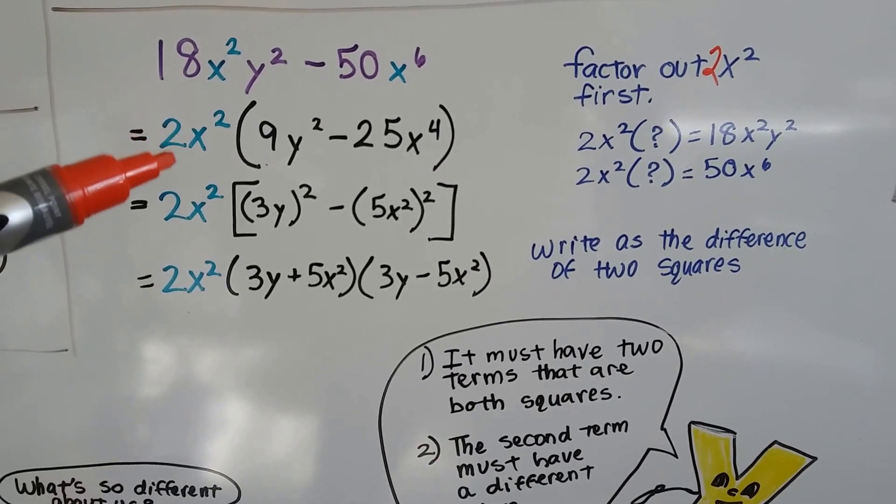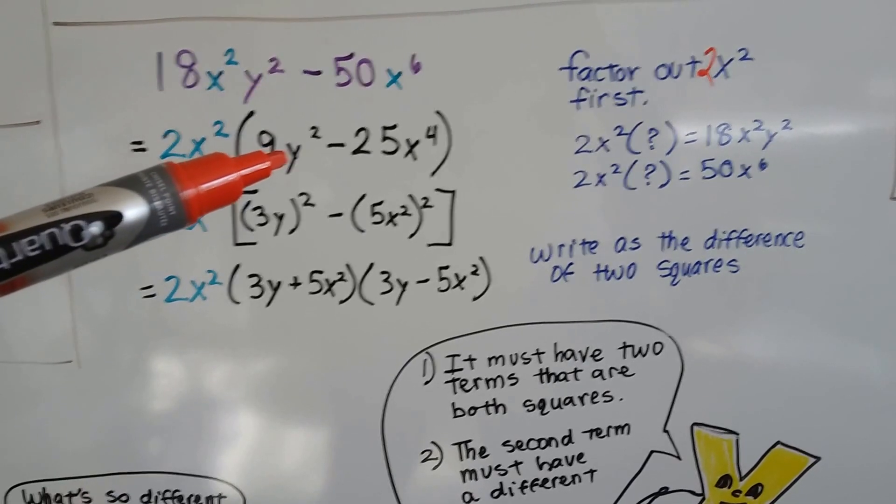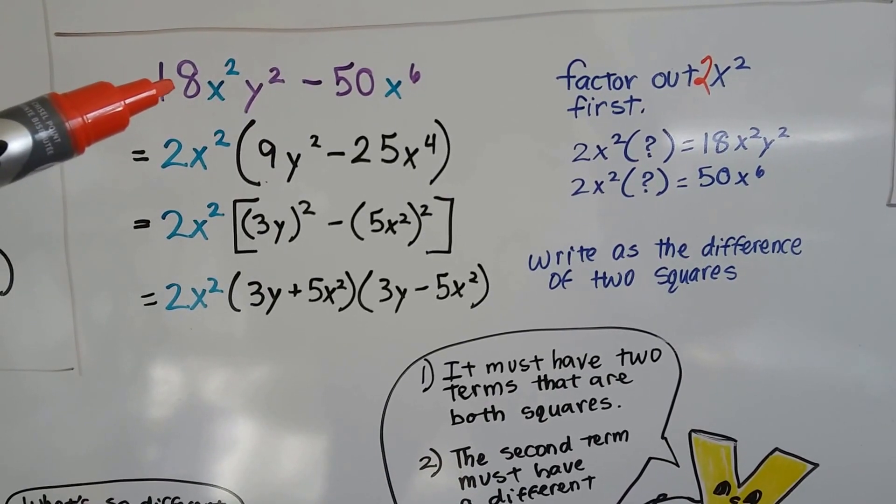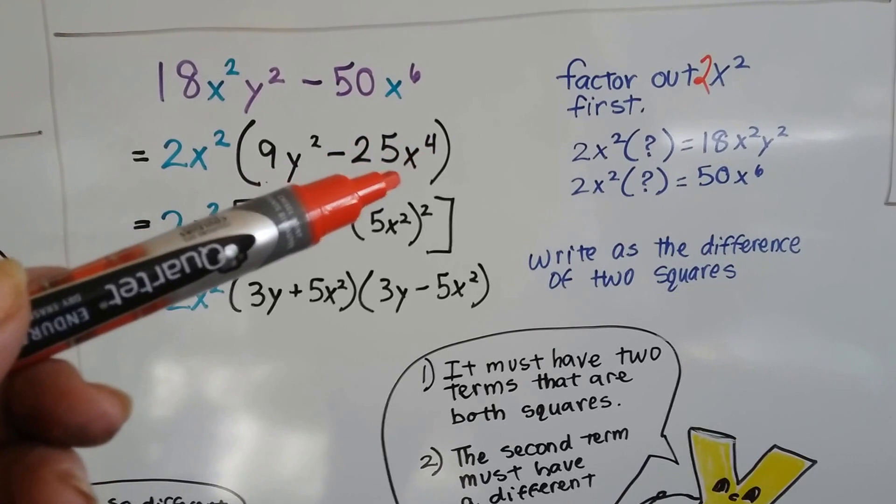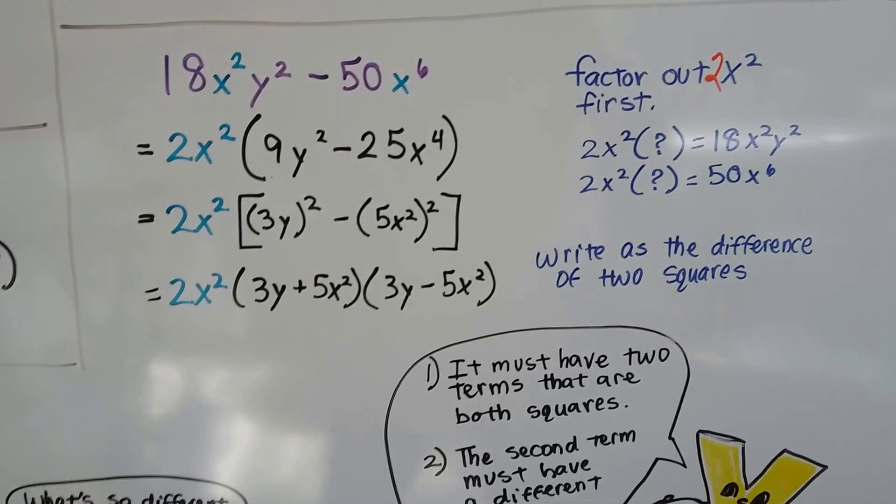And we put him on the outside of the parentheses because 2x² times 9y² is going to give us the 18x²y². And 2x² times 25x^4, because we add the exponents, then we'll get that 6. We'll have 50x^6.